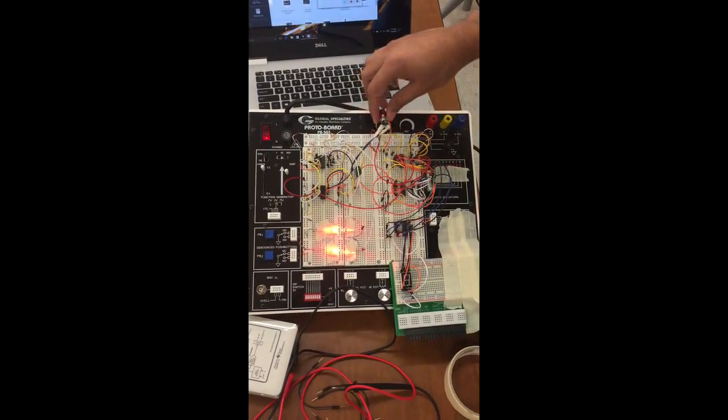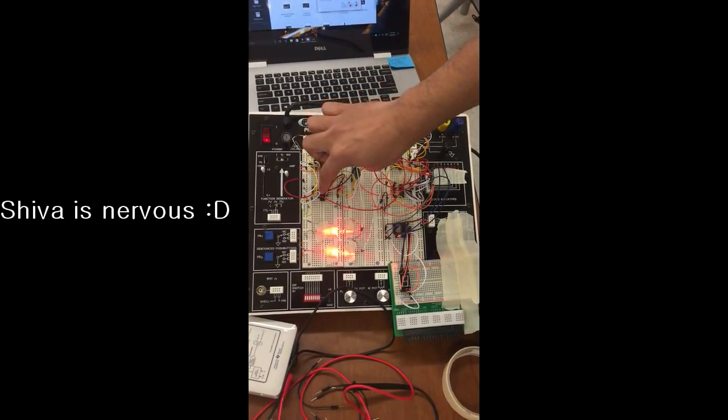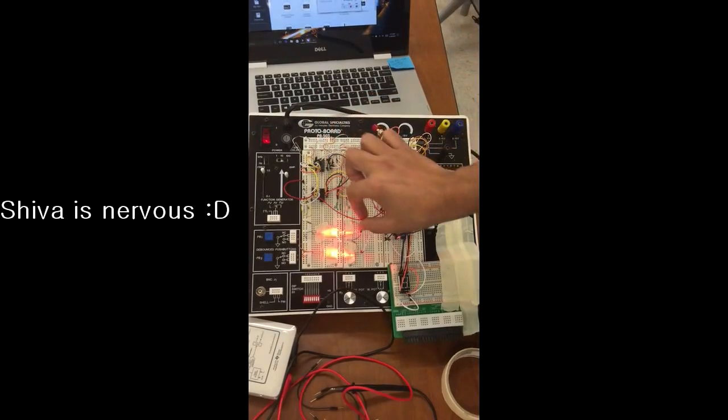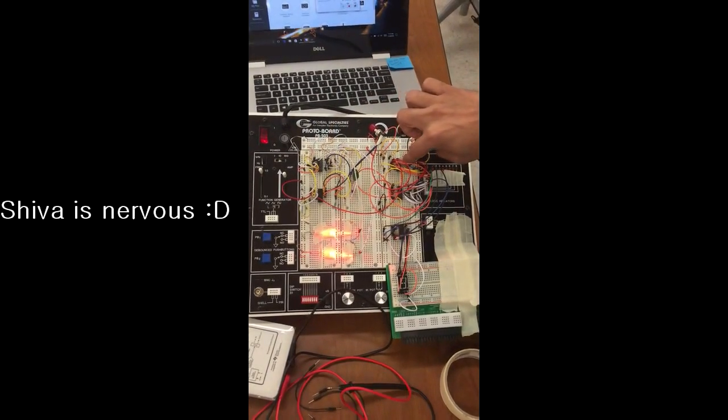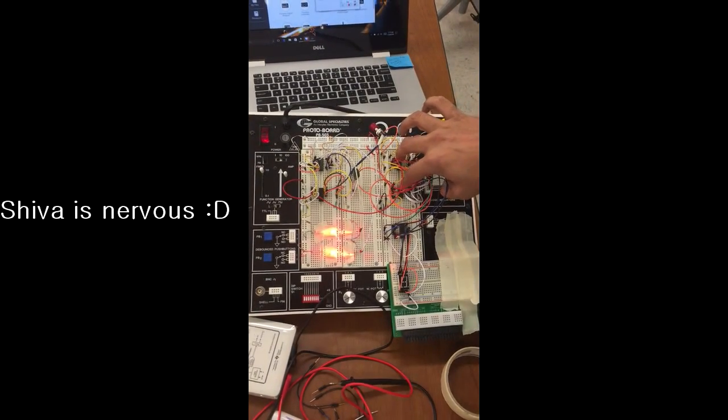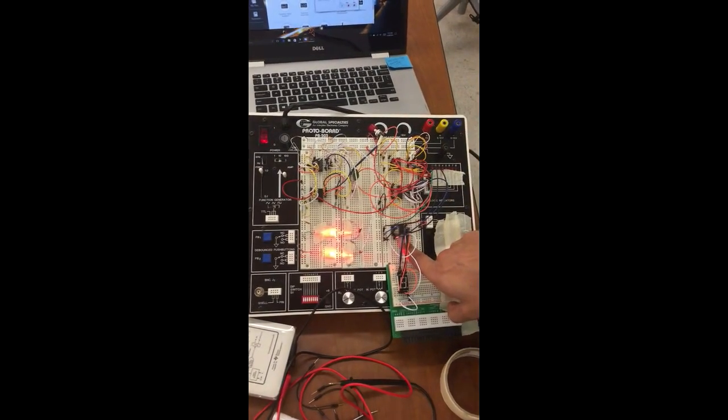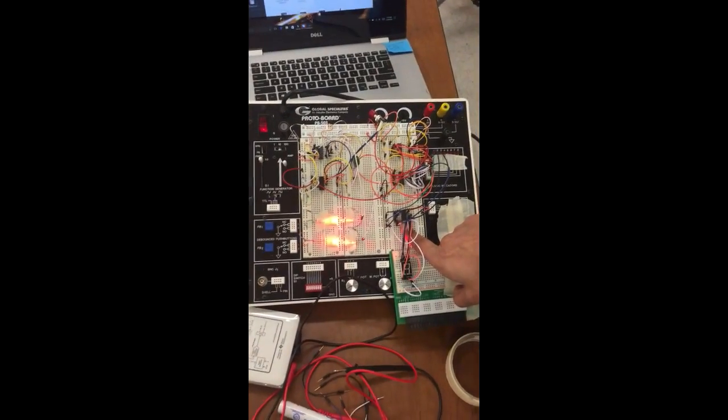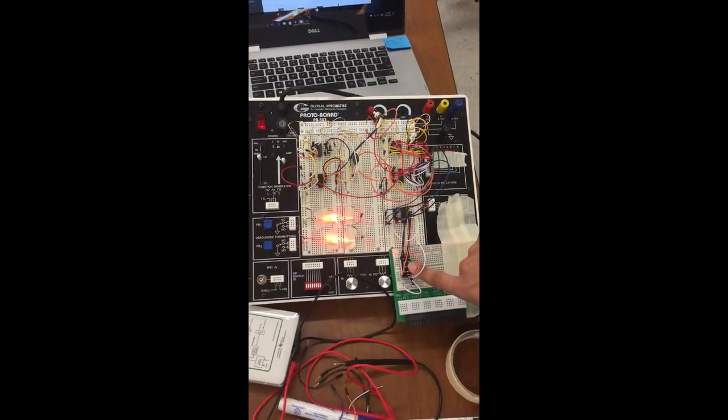The output of the D flip-flops is connected to the decade counters. These are two decade counters, 74LS192, and then there is a decoder which is 74LS47 which is connected to a 7-segment display.